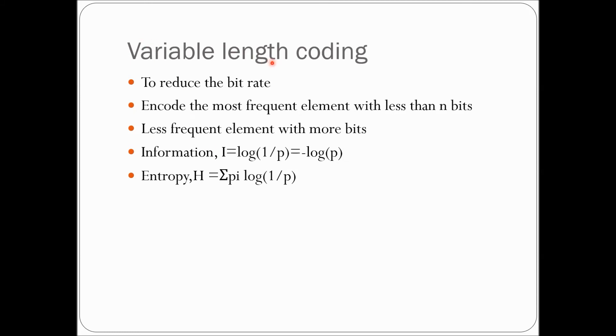The next one is variable length coding. The main function of variable length coding is to reduce the bit rate. Here we reduce the bit rate by encoding the most frequent element with less than n bits and less frequent elements with more bits.